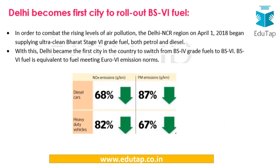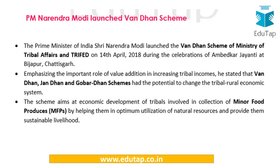Delhi has become the first city to roll out BS-6 fuel. The Supreme Court ordered skipping of BS-5 norms — Bharat Stage 5 — and moving directly from BS-4 to BS-6. BS-6 fuel is equivalent to Euro 6 emission norms. Delhi and the NCR region face significant pollution from stubble burning and vehicle emissions, and this rollout will help reduce particulate matter emissions by around 87 percent compared to previous standards.